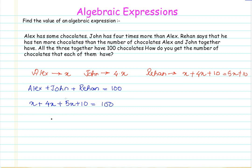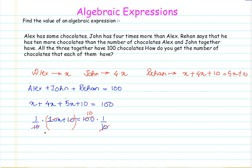Let us put in each of their algebraic expressions and add the like terms. After simplifying, we get the expression 10x plus 10 equals 100. To find the value of x, we multiply both sides by 1 over 10. The terms cancel, giving us x plus 1 equals 10, which means x equals 9.